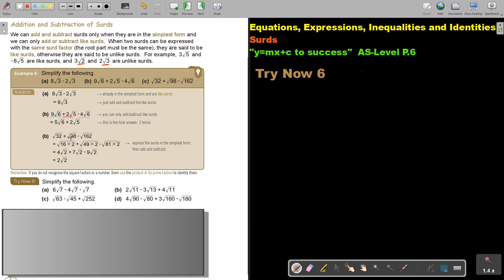Now, this one is not simplified. So I must quickly simplify this. So 16 times square root 2, 49 times 2, 81 times 2. So express, otherwise make use of prime factors. And then I simplify and then I look for my like.